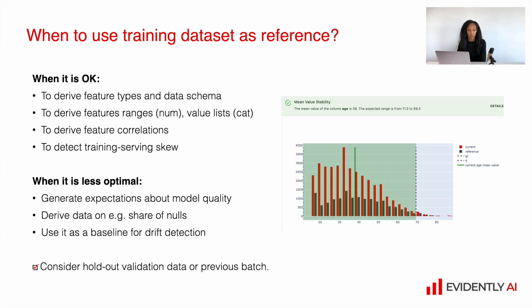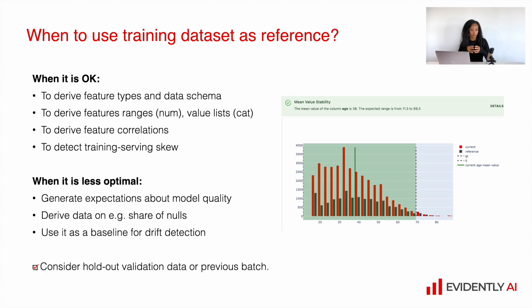When can we use the training dataset as the reference? It's acceptable if we don't have anything else and want to automatically derive test conditions like feature types, data schema, feature ranges, value lists for categorical features, or feature correlations to compare with a new batch of data or detect training-serving skew. But it's not optimal if you want to generate expectations about model quality, because we expect model quality on training data to be much higher than on new production data. The same goes for share of missing values, since we often pre-process the training dataset. It's not a good base for drift detection either. Consider holdout validation data or previous successful production batches instead.